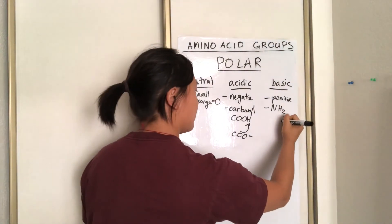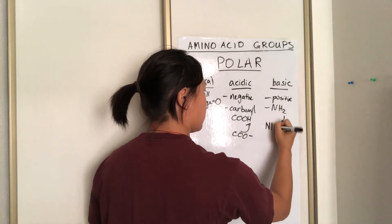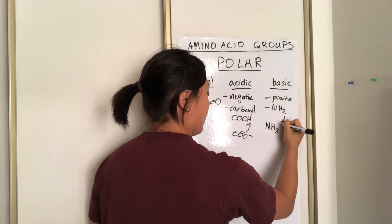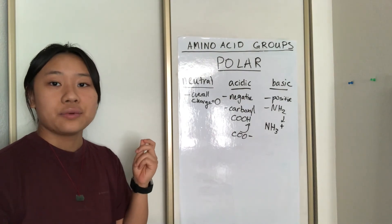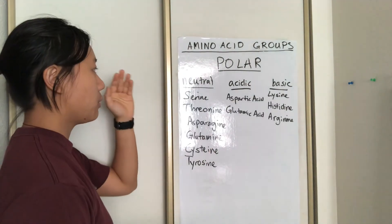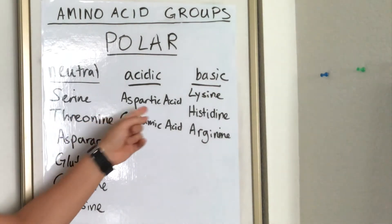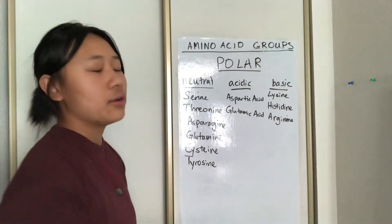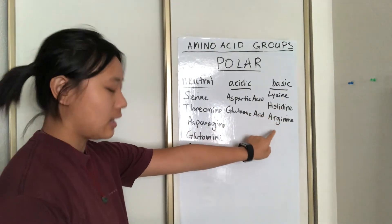This amine group has a tendency to gain another proton or hydrogen ion and become NH3+. Under the polar neutral amino acids, we have serine, threonine, asparagine, glutamine, cysteine, and tyrosine. For the acidic amino acids, we have aspartic acid and glutamic acid — pretty easy to remember since they literally have acid in their name. And for basic, we have lysine, histidine, and arginine.